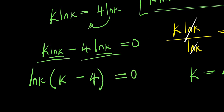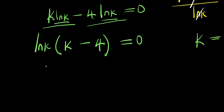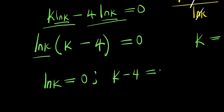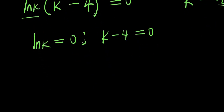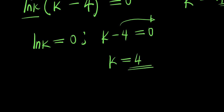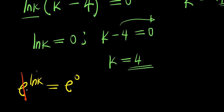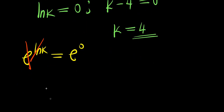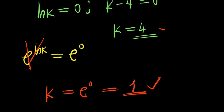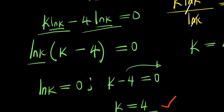At this point I equate each factor to 0: ln k equals 0 and k minus 4 equals 0. From k minus 4 equals 0 we get k equals 4. From ln k equals 0, using e^(ln k) equals e^0, e eliminates ln, and we get k equals e^0 equals 1. So we have two values for k using this method as well.